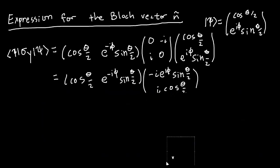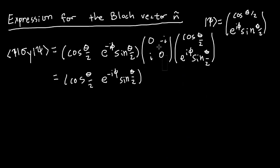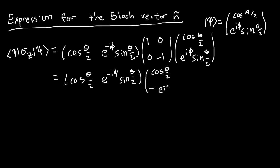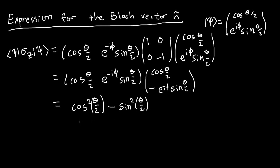For the z-component, sigma_z is diagonal, so it multiplies the top component by +1 and the bottom by -1. The inner product gives cos²(θ/2) - sin²(θ/2). Using the cosine addition formula, this is just cos(θ) = n_z. We've now proven the nice expression for the Bloch vector: n-hat = ⟨ψ|σ⃗|ψ⟩.